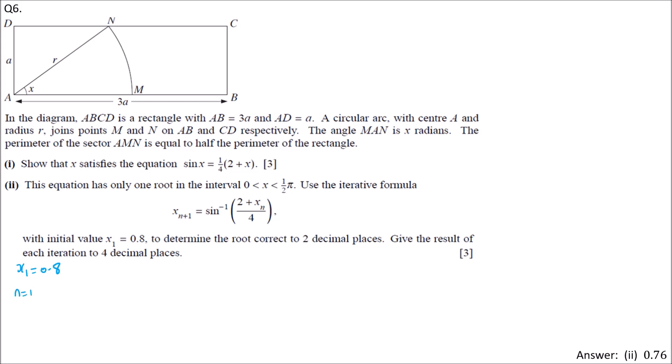Next, we replace N by 1 to get X_2. X_2 equals sin inverse of (2 plus X_1)/4. We have sin inverse of (2 plus 0.8)/4. We evaluate to 4dp: 0.7754.